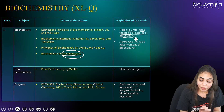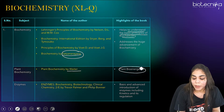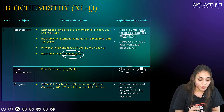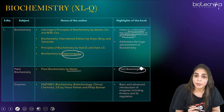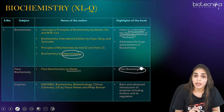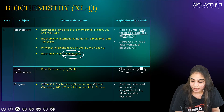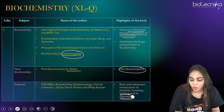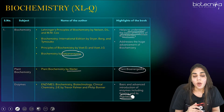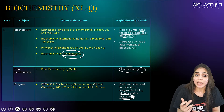For plant biochemistry, you can refer Plant Biochemistry by Waiter, where you will get all the plant bioenergetics content. For enzymes, you can go for Enzymes Biochemistry by Palmer and Palmer. Here you will get basic and advanced knowledge of all the enzymes, their classes, kinetics, and regulation. This covers all of the biochemistry part included under the biochemistry syllabus.